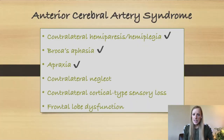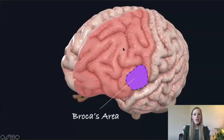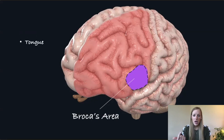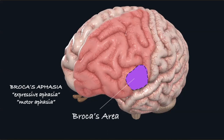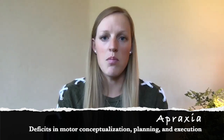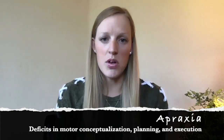Both Broca's aphasia and apraxia still have something to do with our motor function. Broca's area is situated in the lateral premotor cortex in our frontal lobe, adjacent to the areas of our primary motor cortex involved in moving our lips, tongue, face, and larynx. This is why Broca's aphasia is known as the expressive or motor aphasia — we can't produce language very well. Apraxia refers to deficits in motor conceptualization, planning, and execution. Broca's will only occur with a dominant ACA stroke, usually on our left side, and apraxia is also correlated with a left ACA stroke.